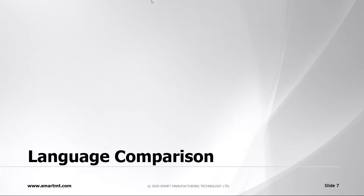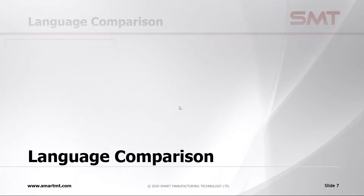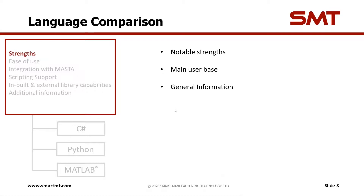So to get underway with the language comparison — what I want to start off with is the major strengths of each of the programming languages. Over on the right-hand side of these title slides are some things we might be discussing in each particular section. It's by no means an exhaustive list, just to give you an overview. We'll be focusing on notable strengths of each one, who might be the main user base for that particular language, and then any other general information. I'm going to start off by handing over to Connor, who's going to talk about C#.